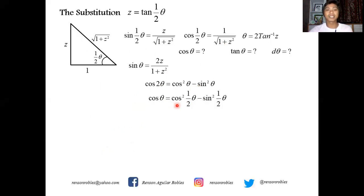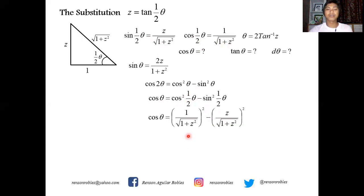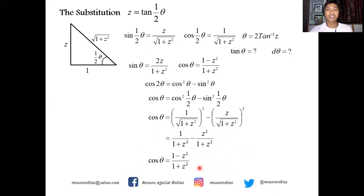For cosine theta, we use the double angle identity: cosine θ equals cosine squared(½θ) minus sine squared(½θ). Substituting, we get [1 over √(1+z²)]² minus [z over √(1+z²)]², which gives 1 over (1+z²) minus z squared over (1+z²). Writing this as one fraction, cosine θ equals (1 minus z squared) over (1 plus z squared).